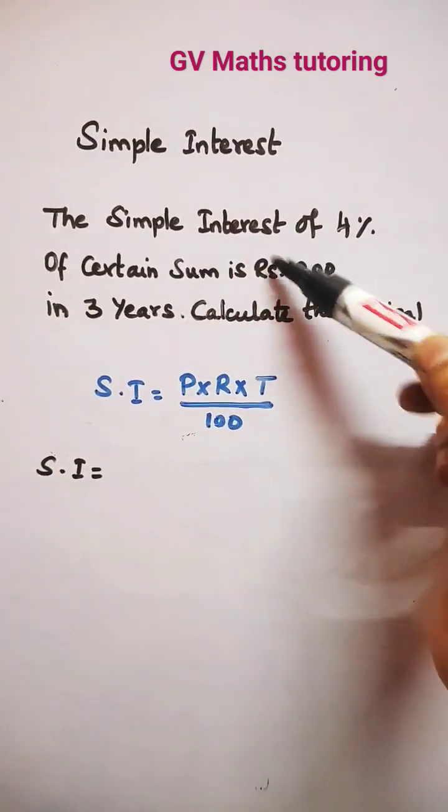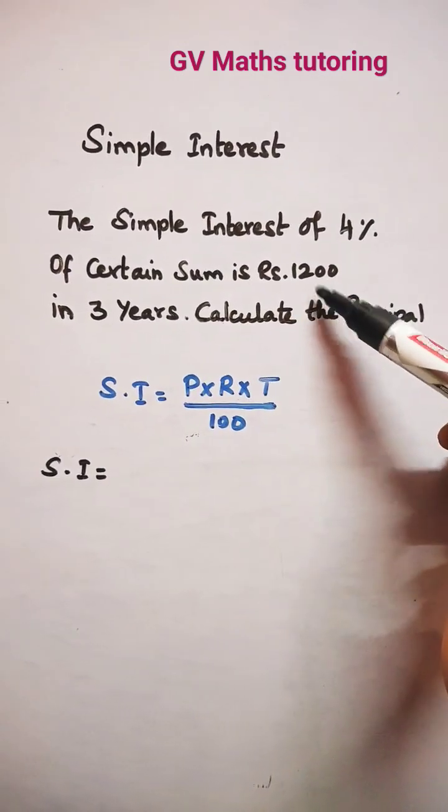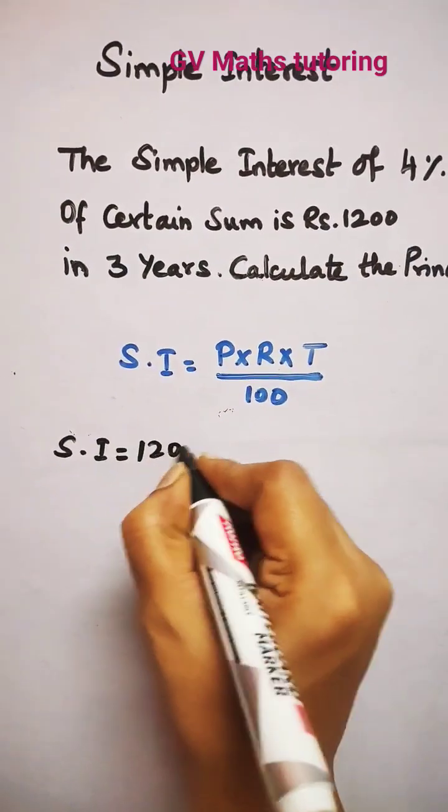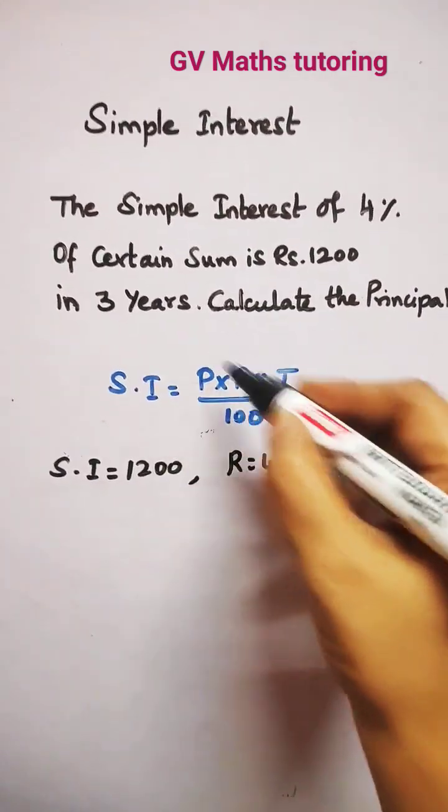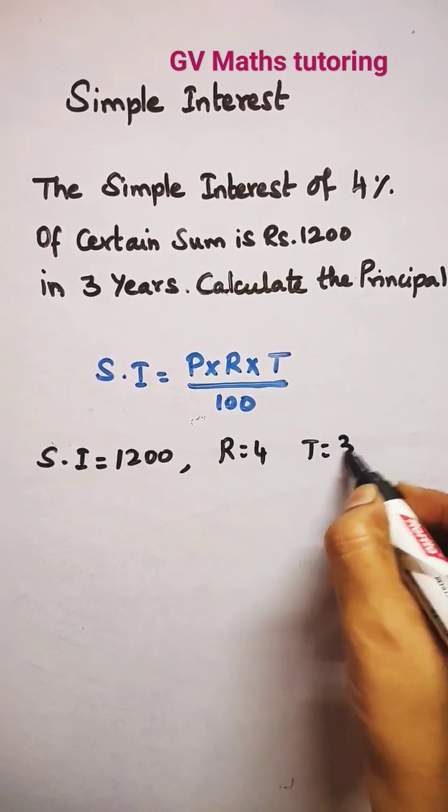Here the value of simple interest is given, that is 1200. SI equal to 1200 and rate of interest is given, that is 4%, and time period is given, that is equal to 3 years.